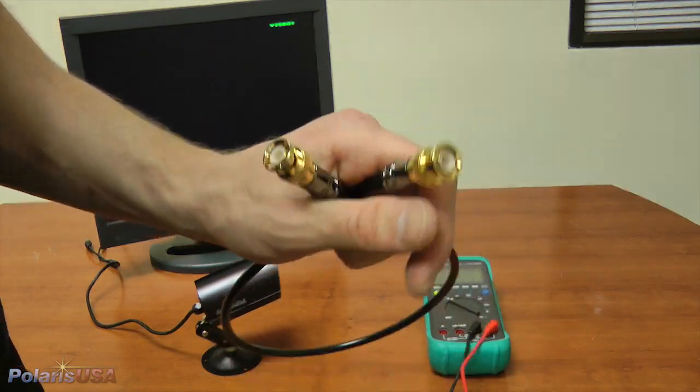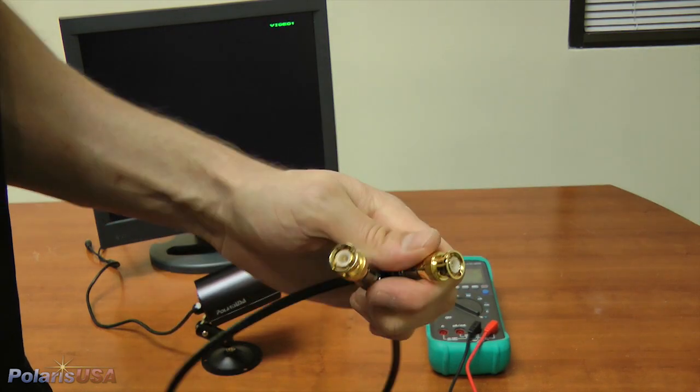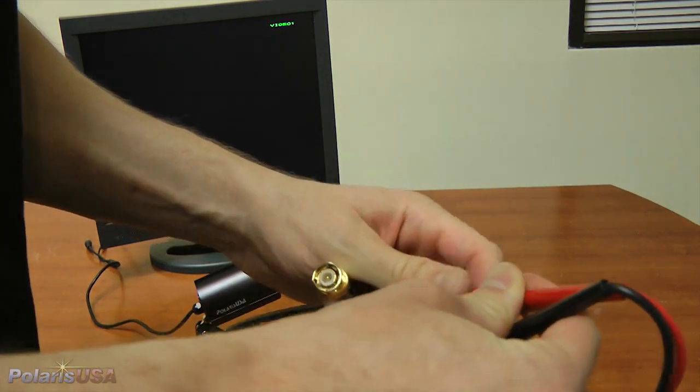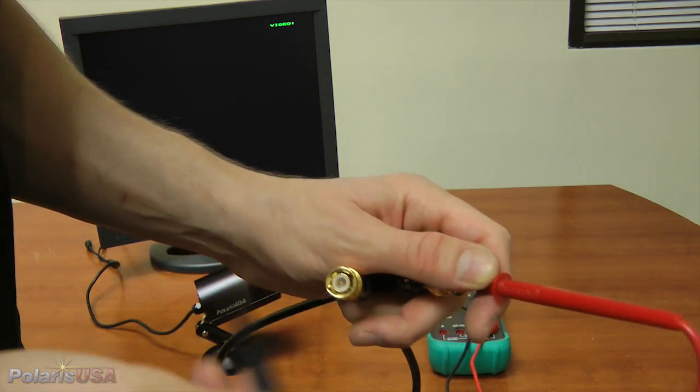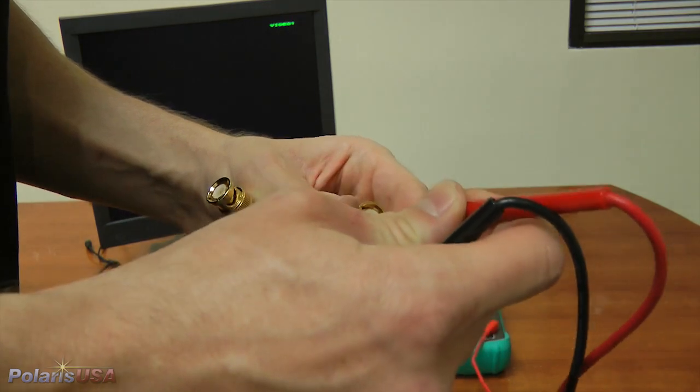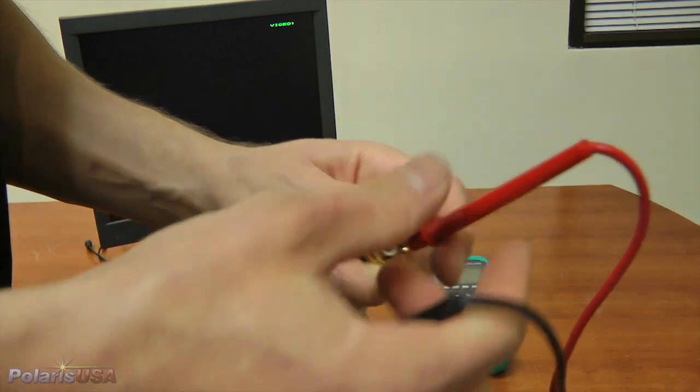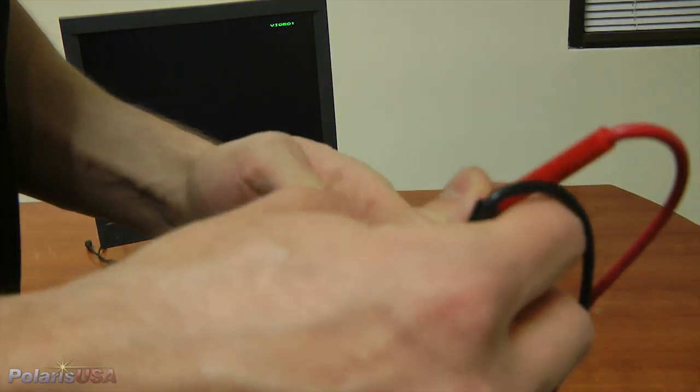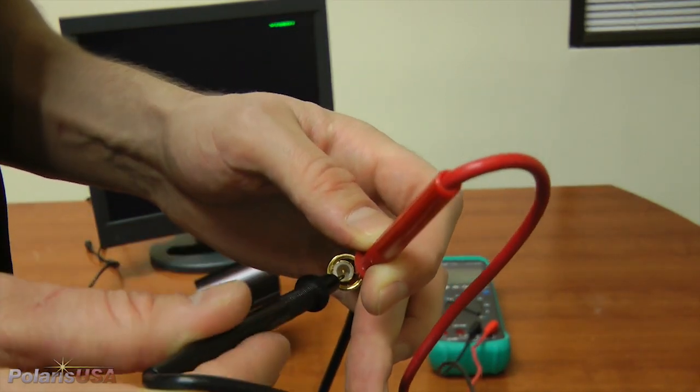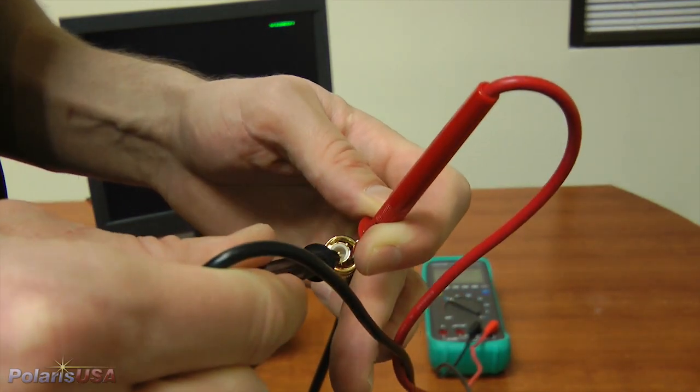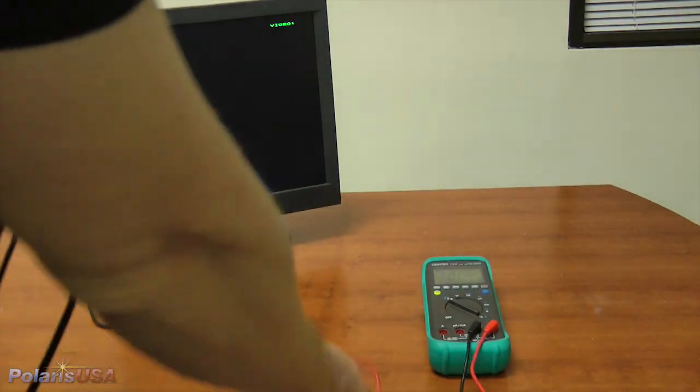Now that my cable is complete, I'm going to verify its integrity using my continuity checker. To do so, I'm first going to test center post to center post, just as we've been doing. In addition, I'm going to test shield to shield. And finally, I'm going to ensure that there's no short by testing center post to shield, which should not be conductive. If your cable passes all of these tests, you've made a good cable.